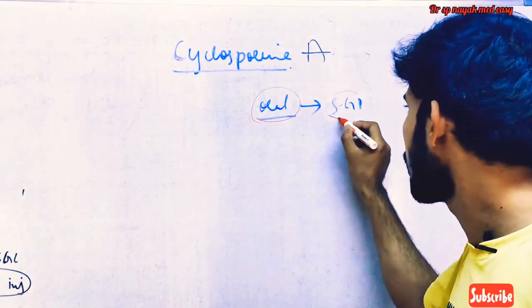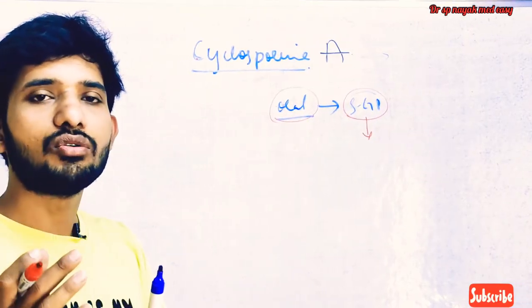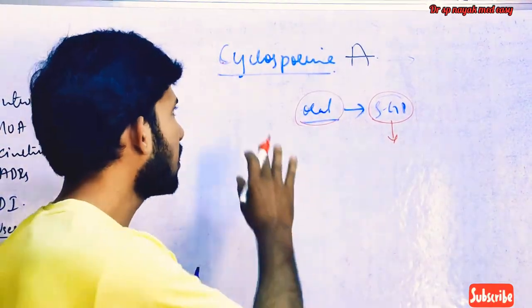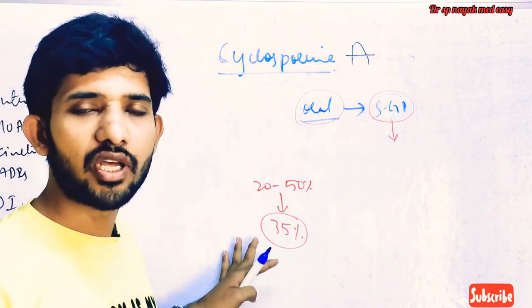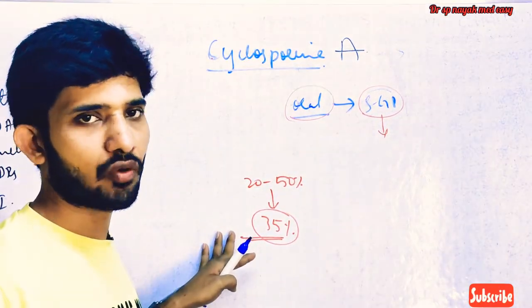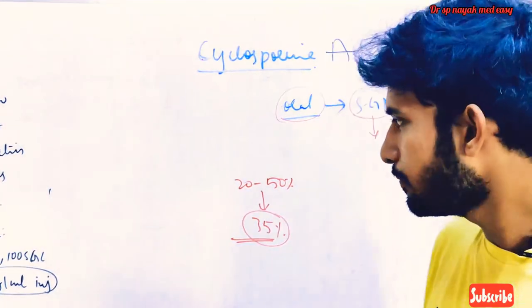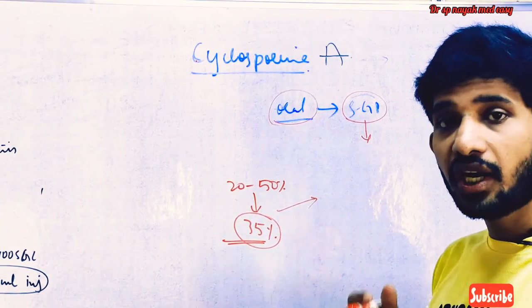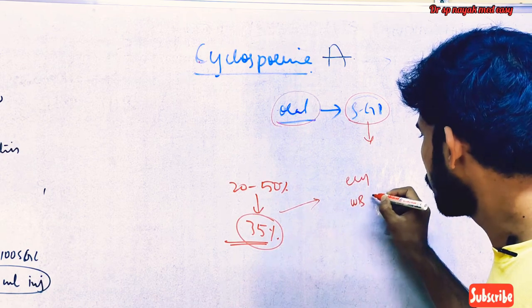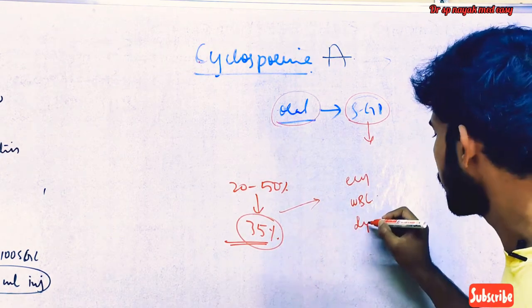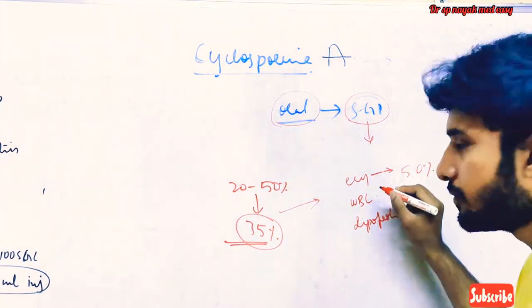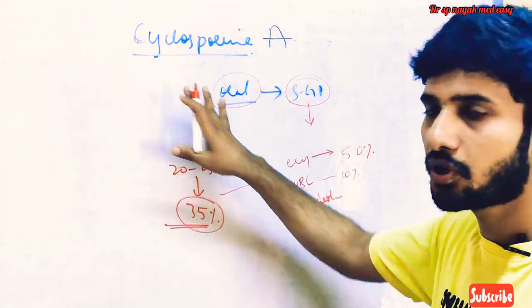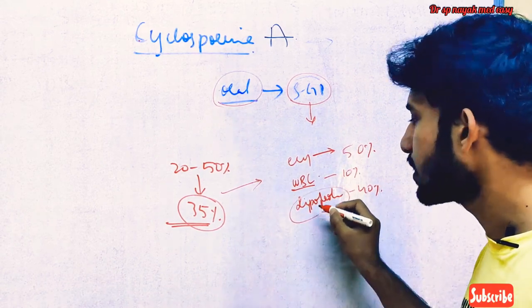When the oral form is given, cyclosporine is absorbed from the GI tract and undergoes severe first-pass metabolism. Due to first-pass metabolism, the bioavailability of cyclosporine is around 20 to 50 percent, roughly around 35 percent. After first-pass metabolism, it is distributed in tissues through binding on erythrocytes or white blood cells (leukocytes) and on lipoproteins. About 50 percent of cyclosporine binds on red blood cells, 10 percent binds on white blood cells, and the remaining 40 percent binds on lipoproteins.